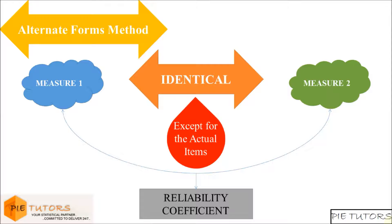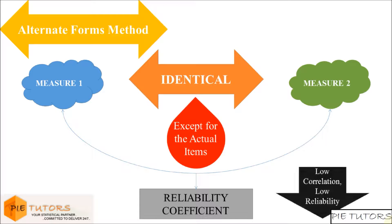If the correlation between the alternative forms is low, this would indicate low reliability of the measures.